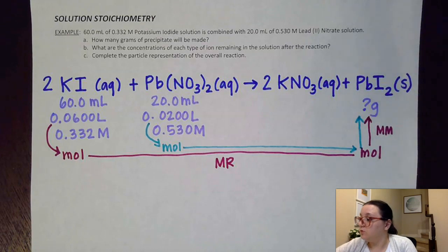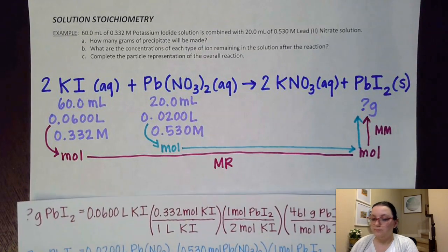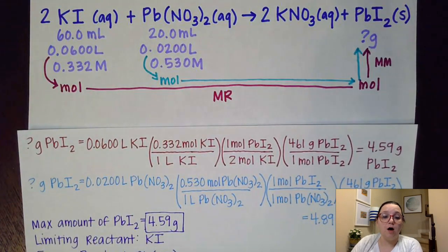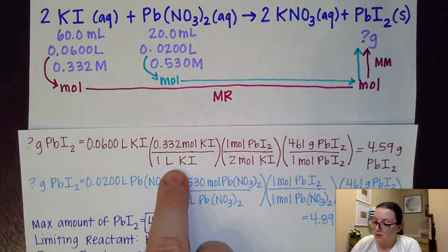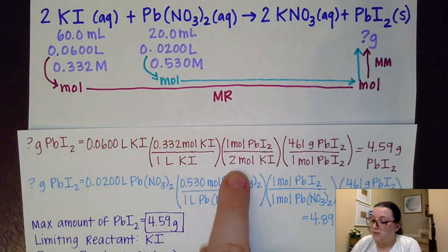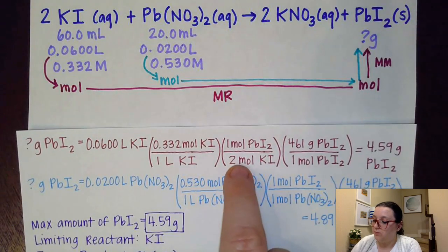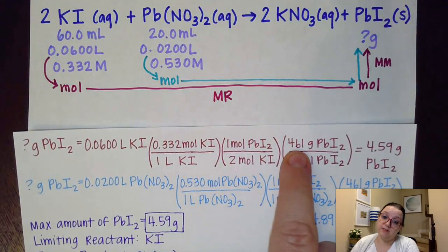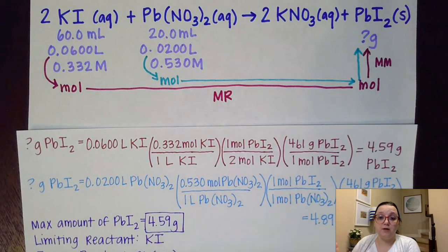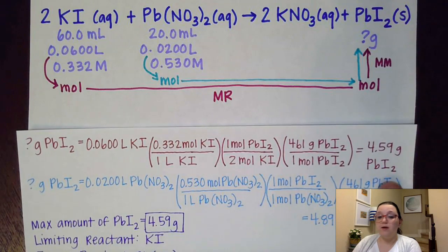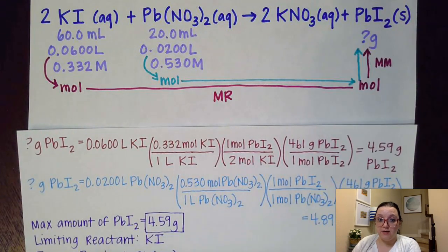For potassium iodide, I start with my volume, use the molarity — 0.332 moles per liter — then do my mole-to-mole ratio. There's a 2-to-1 ratio between KI and PbI₂. Then I said every one mole of PbI₂ has a molar mass of 461 grams, which I tallied off the periodic table. That gives me that the KI is capable of making 4.59 grams of PbI₂.